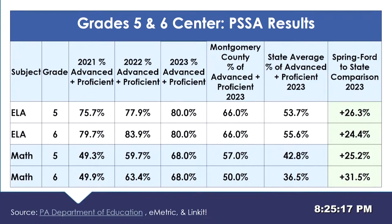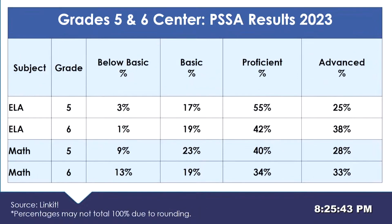This is the same breakdown as the previous slide for third and fourth grade, just shown a little differently. This has the information from 2021, 2022, and 2023, again with the Montgomery County average of proficient and advanced, the state average, and the green block showing all the differences from the state averages. The next slide shows the breakdown again of below basic, basic, proficient, and advanced scores.